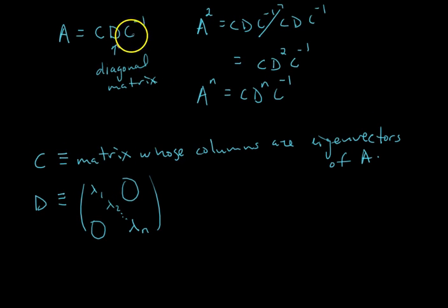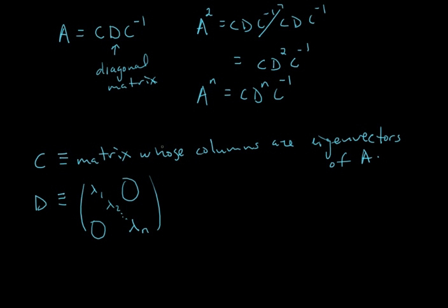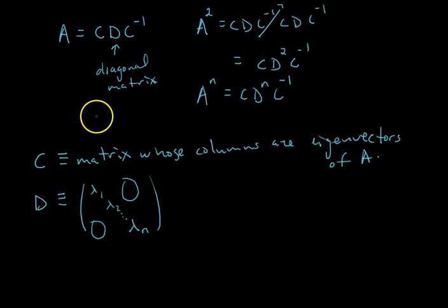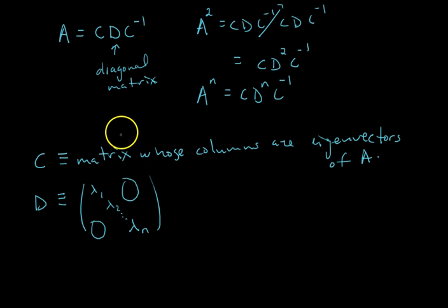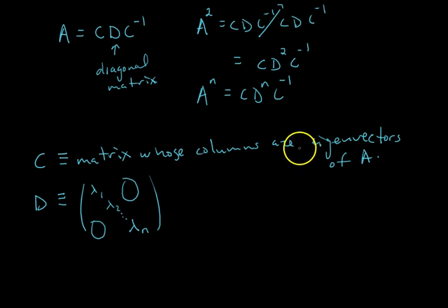You need C, D, and C⁻¹, so that means C has to be invertible. The invertible matrix theorem says that for C to be invertible, its columns must be linearly independent. Since the columns of C are eigenvectors, you need n linearly independent eigenvectors of A. Assuming A is an n×n matrix, C would be n×n with n columns, so you need n linearly independent eigenvectors to construct an invertible C.